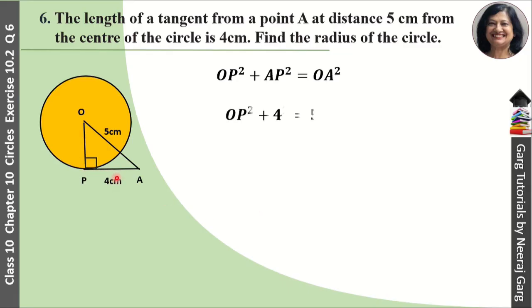Ab haamne OP find karna hai. AP haamne given hai 4 cm. And OA haamne given hai 5 cm. To OP square plus 4 square that is equal to 5 square. OP square plus 16 is equal to 25. Ab 16 ko humi thar le jayenge. To OP square is equal to 25 minus 16. Then OP square is equal to 9.